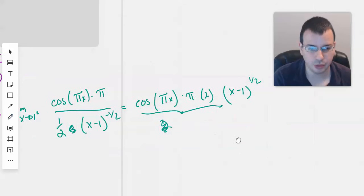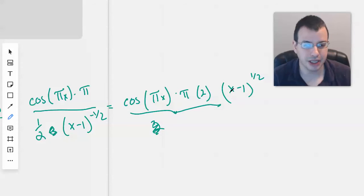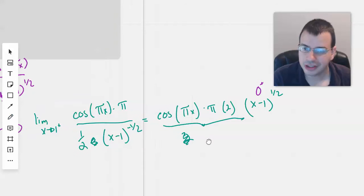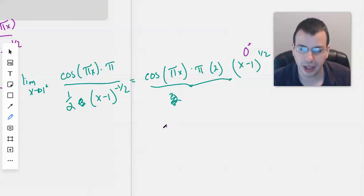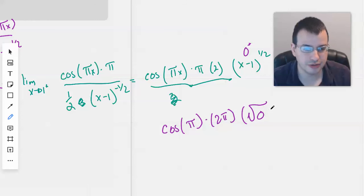1 plus meaning slightly bigger than 1. So when we plug it in here, we'll get 0. But we'll get a 0 that's positive. That way we can take the square root of it. Though we can take the square root of 0 as well. We just can't divide by it.